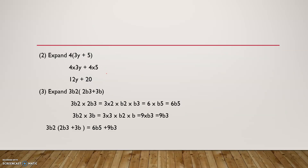Next example: expand 4 times (3y plus 5). We'll have to expand this one. We multiply this term by each term inside the bracket — so 4 times 3y plus 4 times 5. That gives us 12y plus 20.